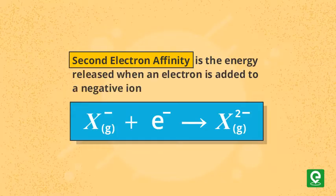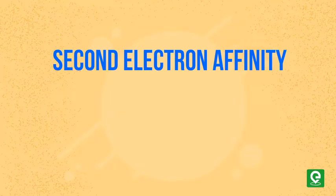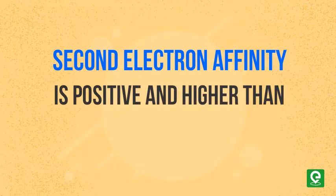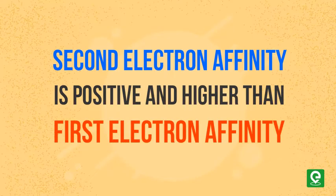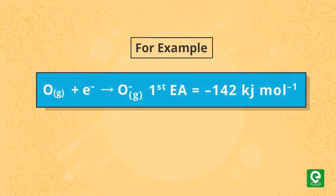The second electron affinity is positive because more energy is required to add an electron to a negative ion as compared to a neutral atom. For example, first electron affinity of oxygen is minus 142 kilojoules per mole, while second electron affinity is plus 844 kilojoules per mole.